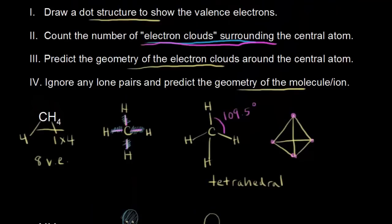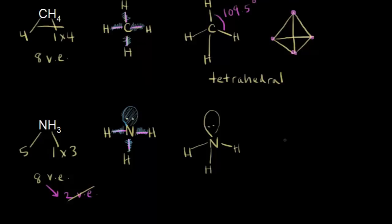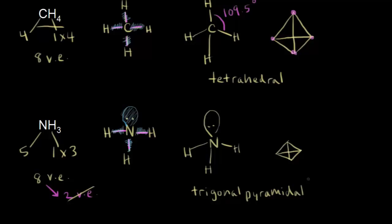In step 3 we predicted the electron clouds will attempt a tetrahedron shape around our central atom. But when talking about the geometry or shape of the molecule, we ignore any lone pairs. When we look at the ammonia molecule, we ignore that lone pair of electrons on top of the nitrogen and focus on the bottom part. When we do that, we get something that looks like a little squat pyramid. We call this trigonal pyramidal — so even though the electron clouds attempt a tetrahedral arrangement, the shape is trigonal pyramidal because we ignore lone pairs.